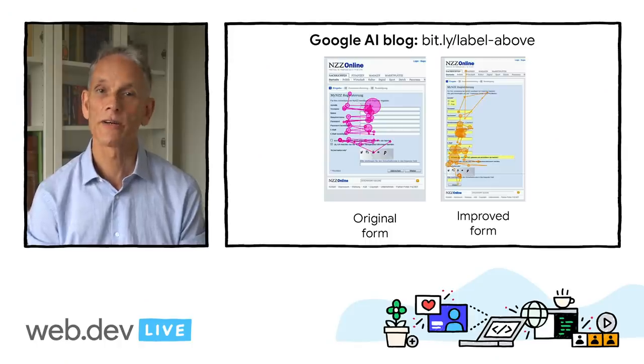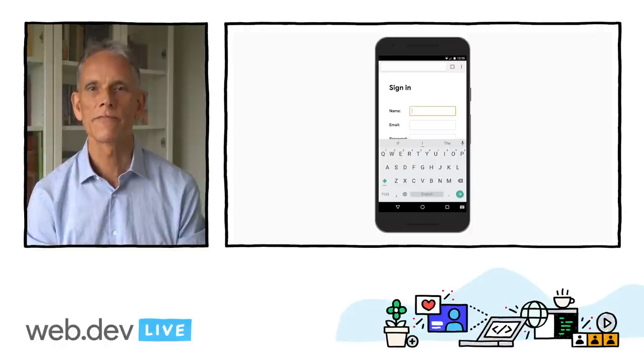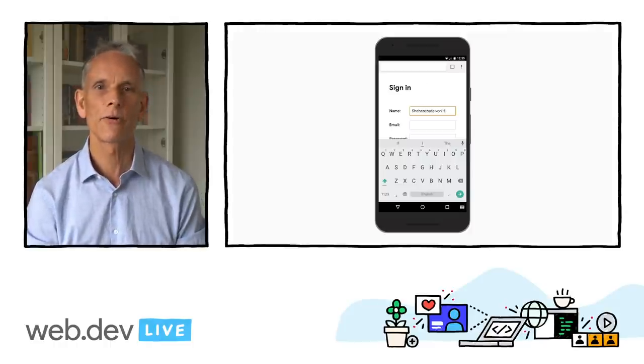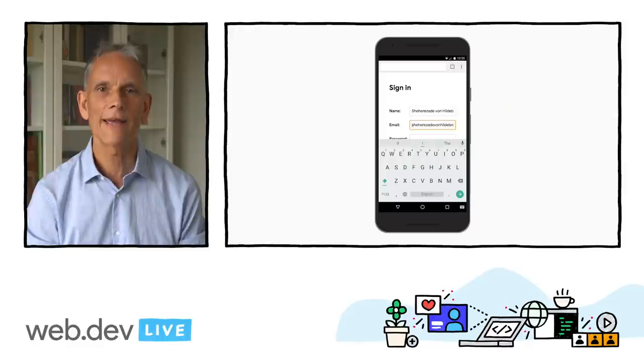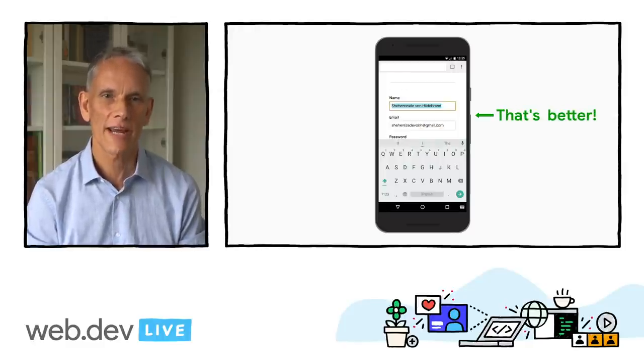There are other potential problems with placeholders, and you can see the article that goes with this video if you're unconvinced. It's probably best to put your labels above your inputs. This enables consistent design across mobile and desktop, and according to Google AI research, enables quicker scanning by users. You get full-width labels and inputs, and you don't need to adjust label and input width to fit the label text.